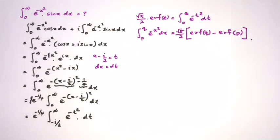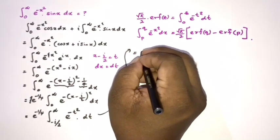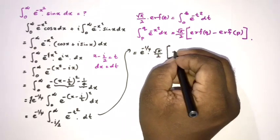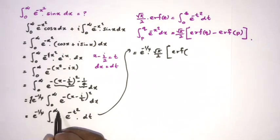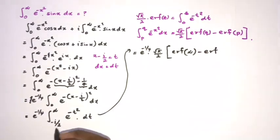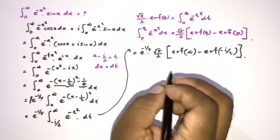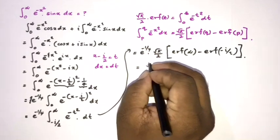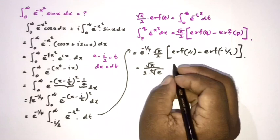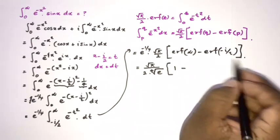So our integral becomes e to the minus 1 over 4 times square root of pi over 2 times ERF of infinity minus ERF of minus i over 2. This simplifies to square root of pi over 2 times the 4th root of e, since ERF of infinity equals 1, giving 1 minus ERF of minus i over 2.